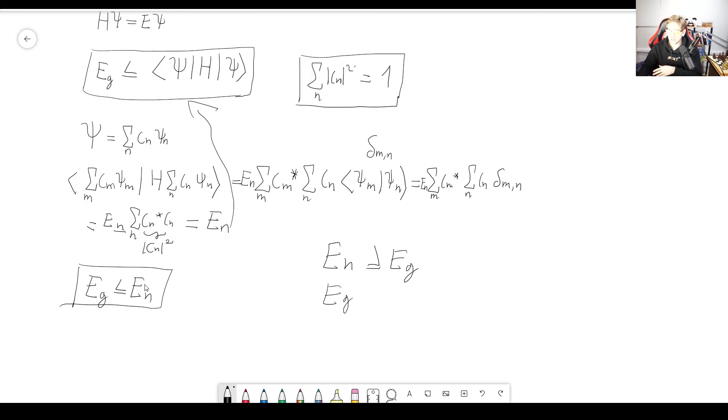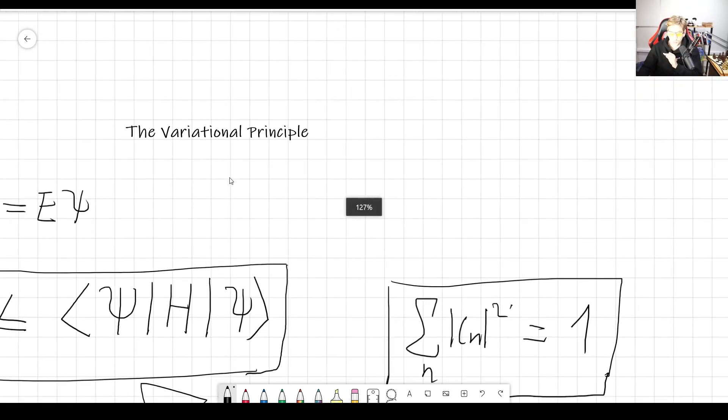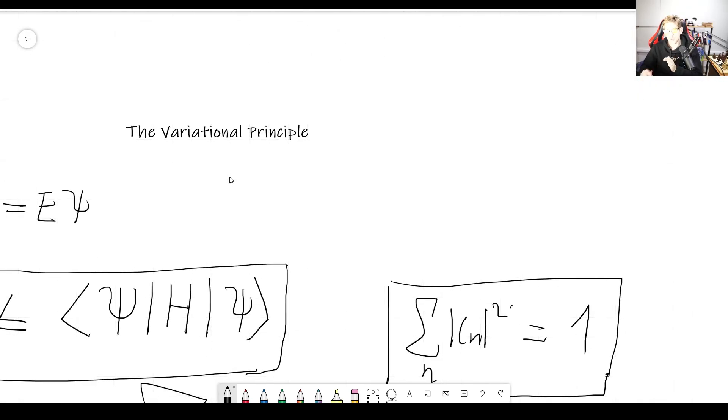So the important thing to take away from the variational principle is that regardless of which wave function you choose, you will always overestimate the energy from the ground state. Now, this doesn't tell you anything about the energy of the first excited state or second or whatever. This is only good, at least in this form, to find the energy or try to estimate the energy from the ground state. Again, we don't know by how much we might be off, but it's still a pretty good tool.